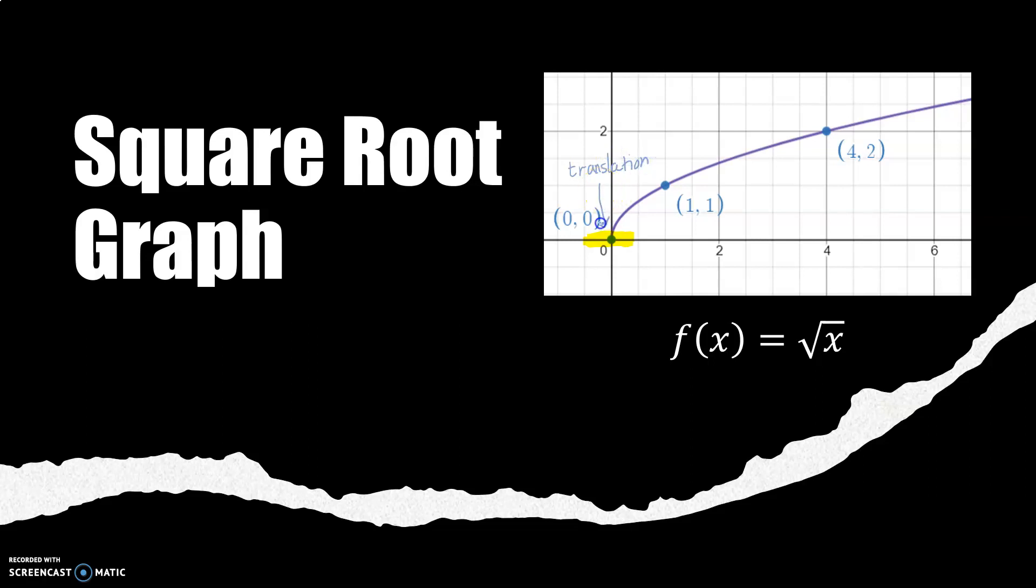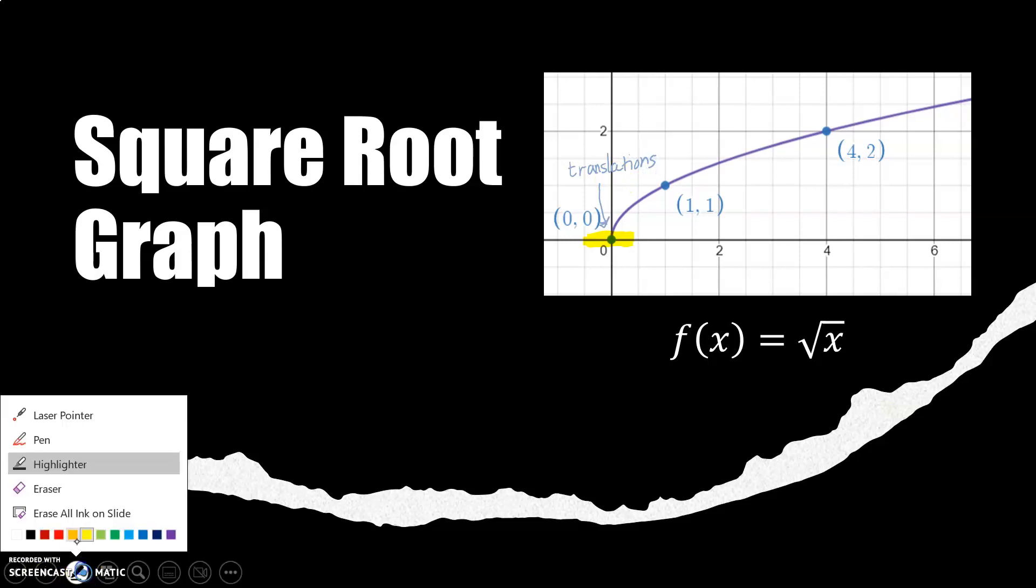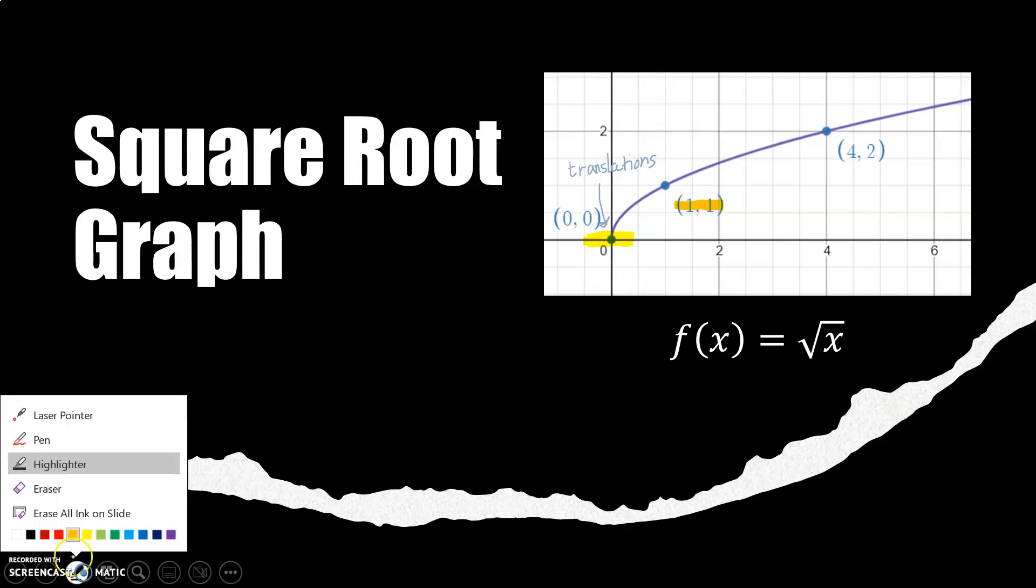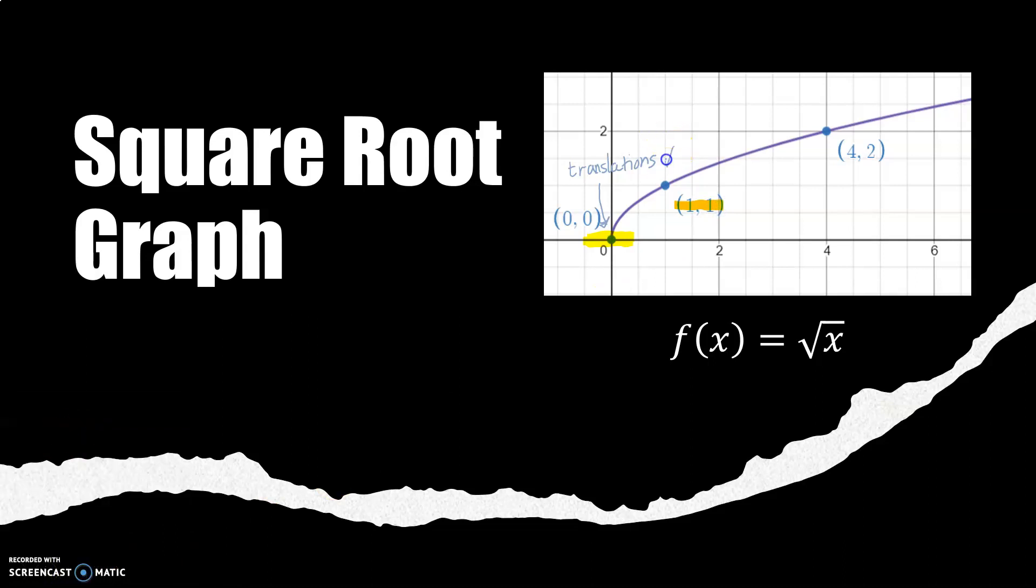The other point that you should know about is the point one comma one. One comma one is going to be the point that you use for stretches and compressions. And the way you'll use it is you will multiply your y-coordinate by A to do your stretch or compression.